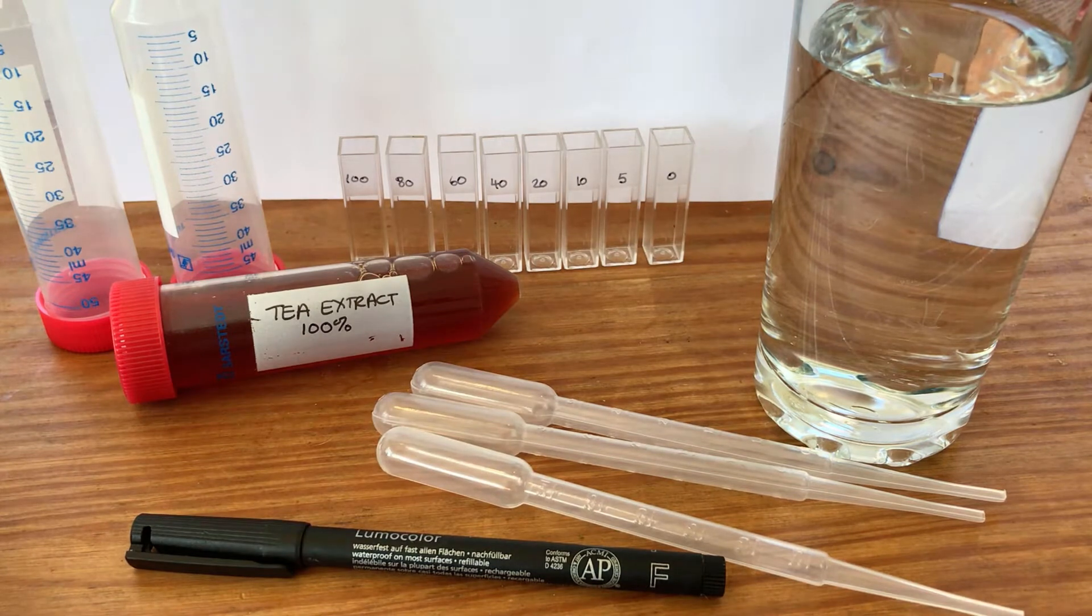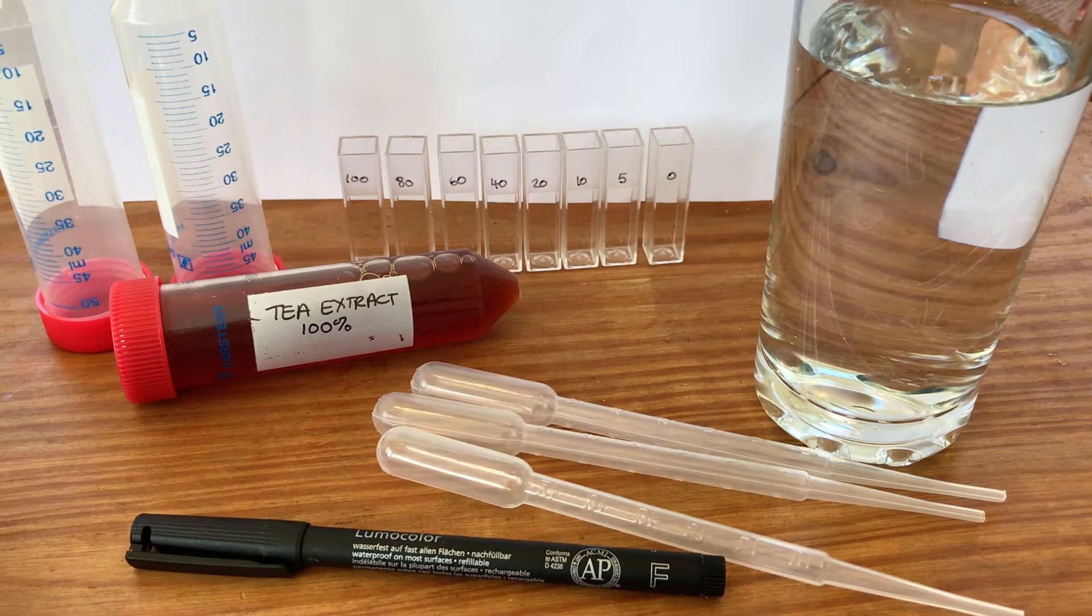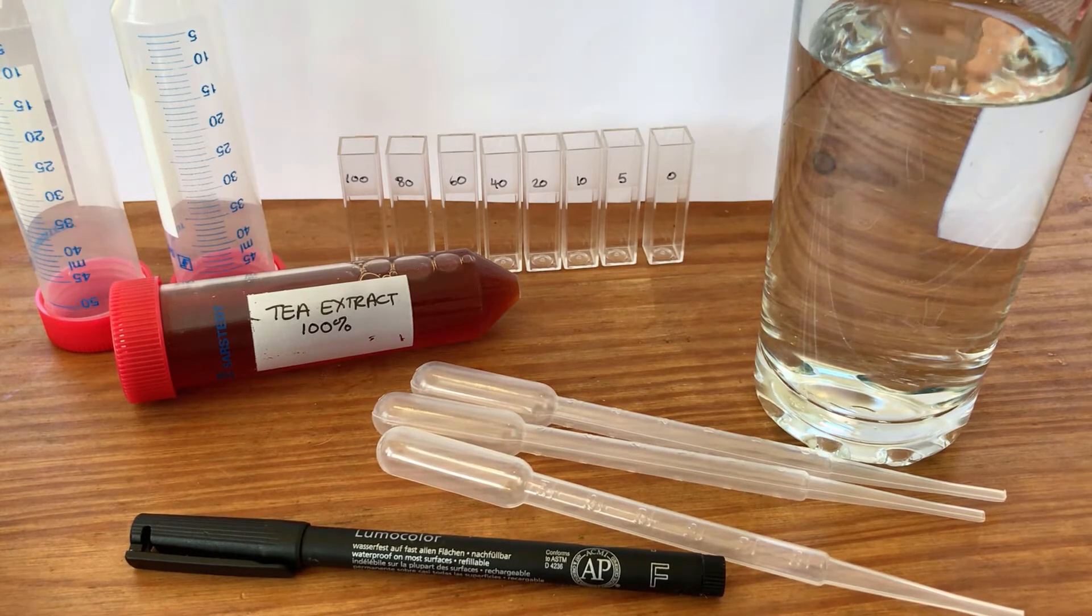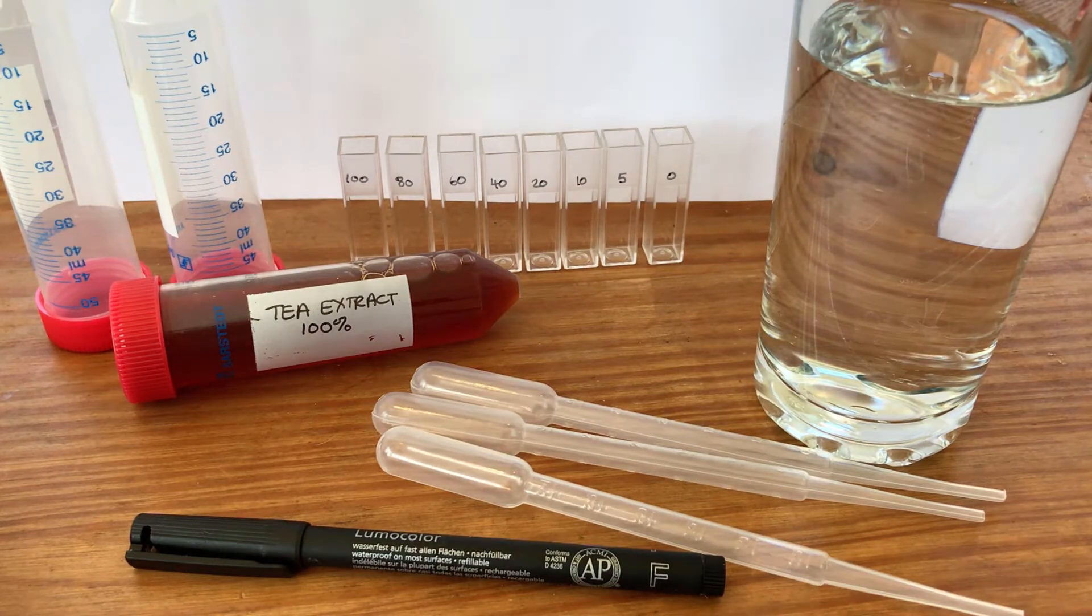I have literally boiled the kettle, made a cup of black tea. I let the tea steep for a minute in about 50 mils of water and I've just put that into the falcon tube, so that's my extract of tea.